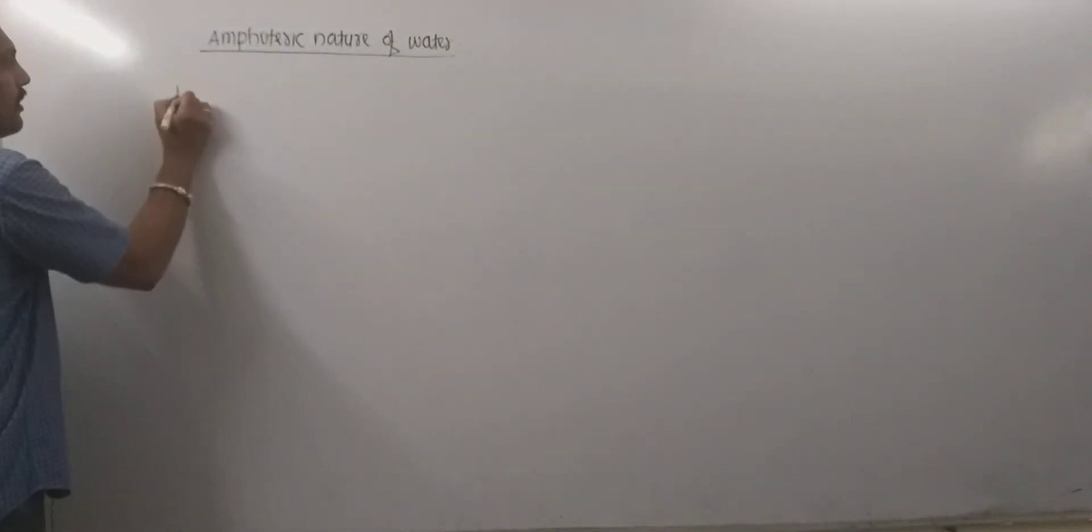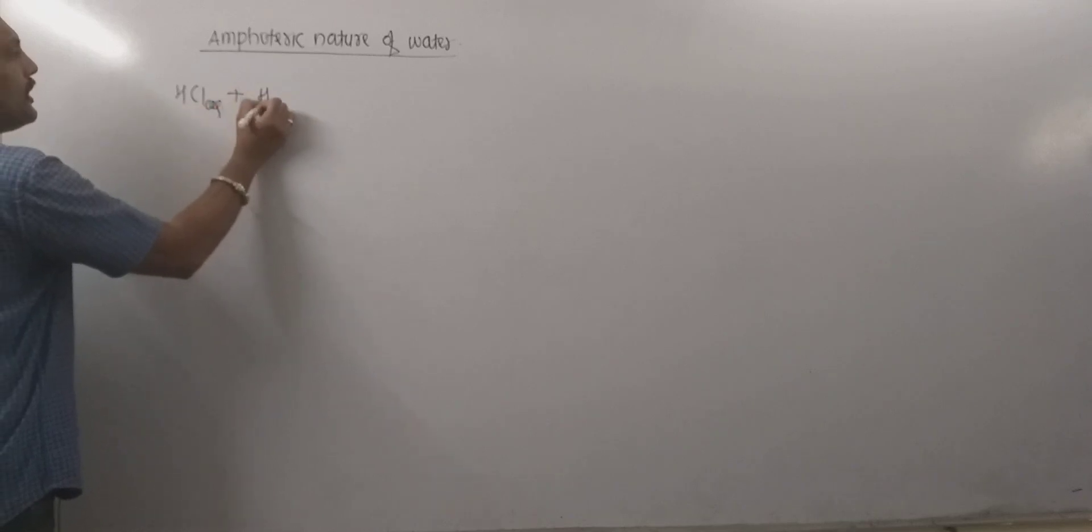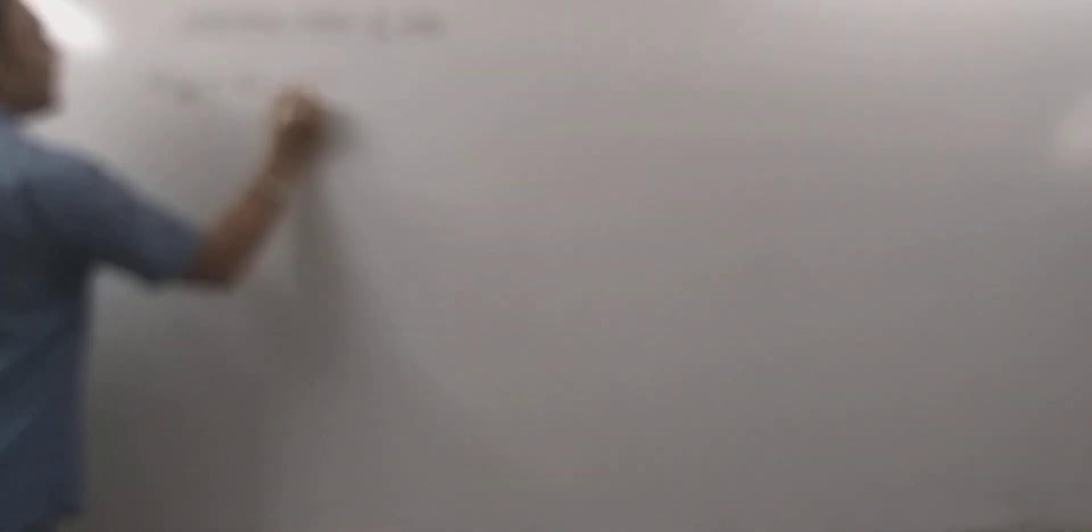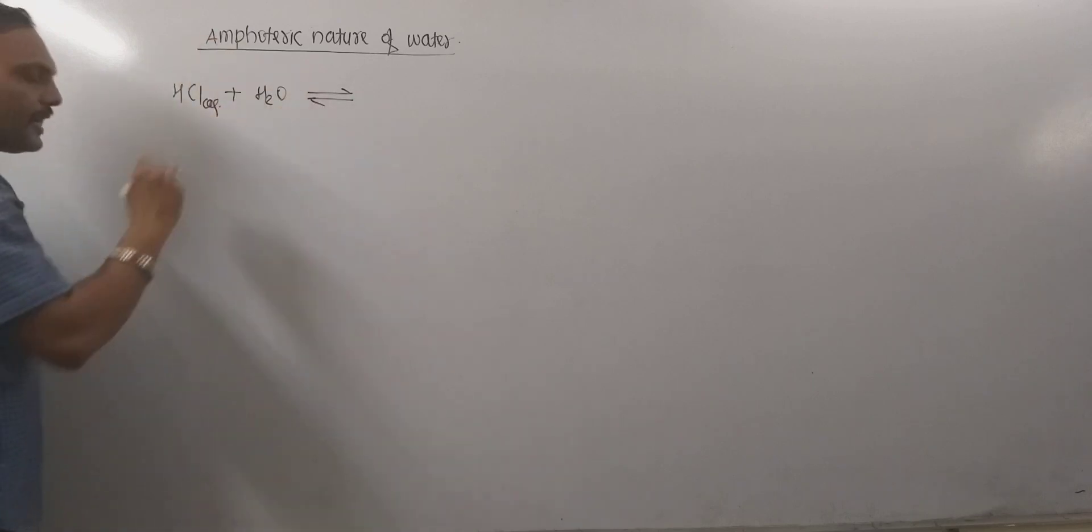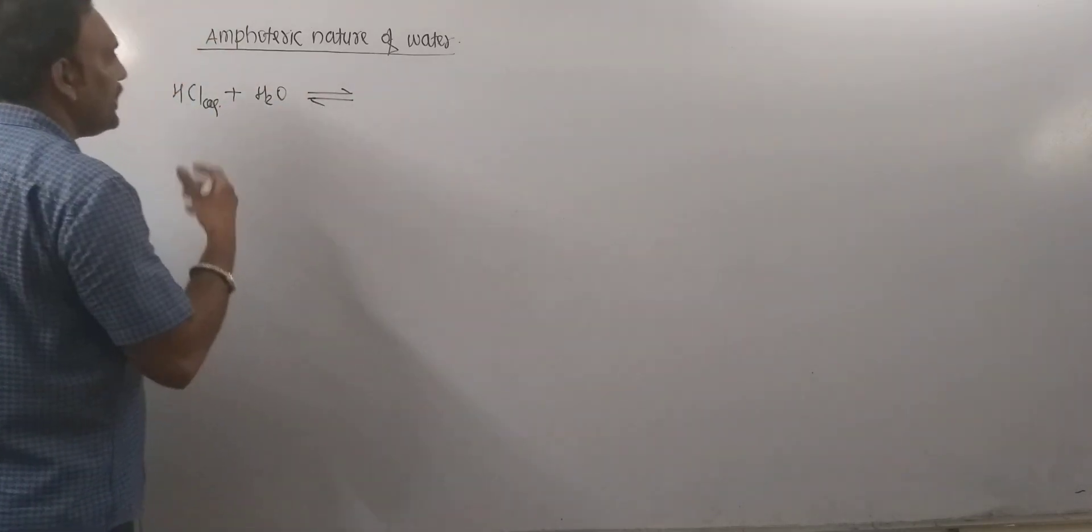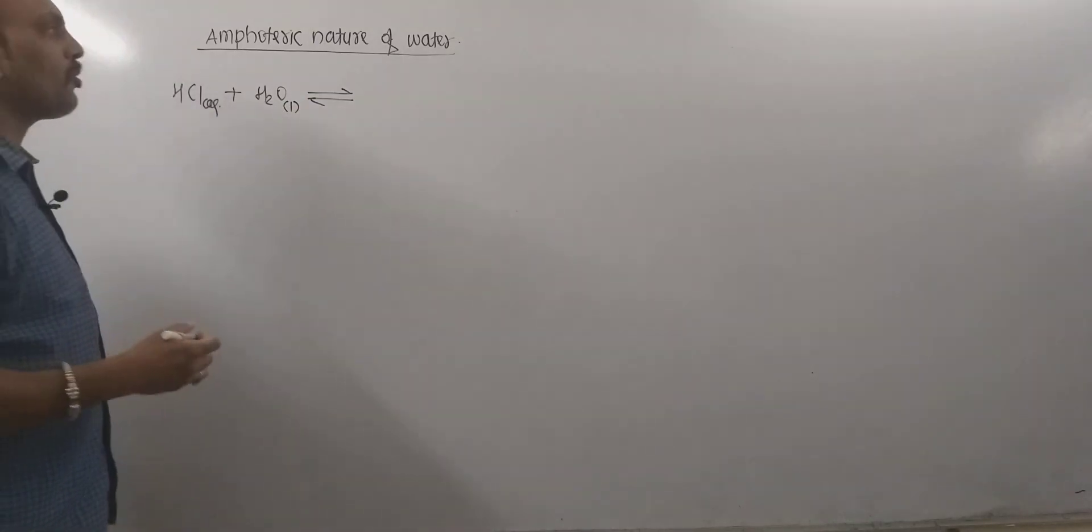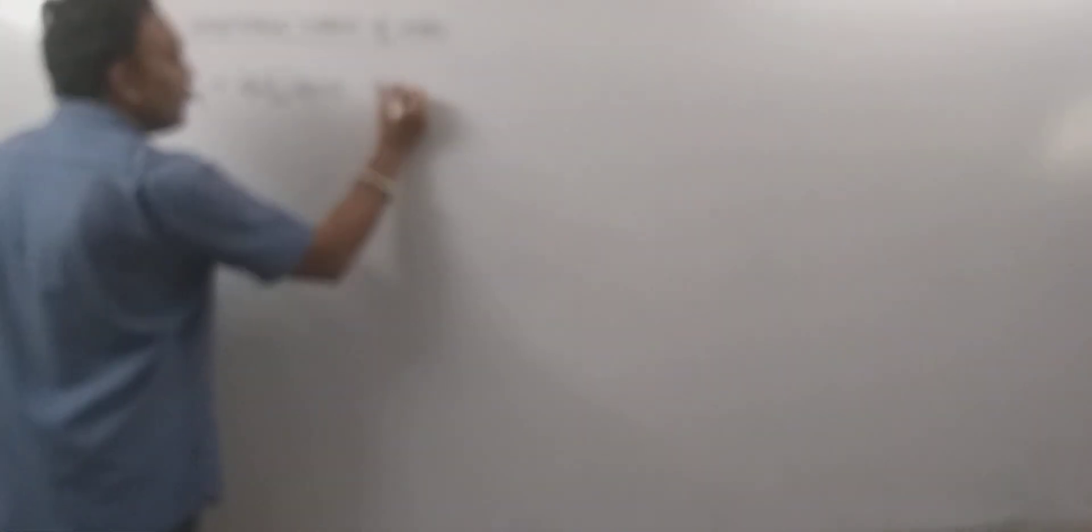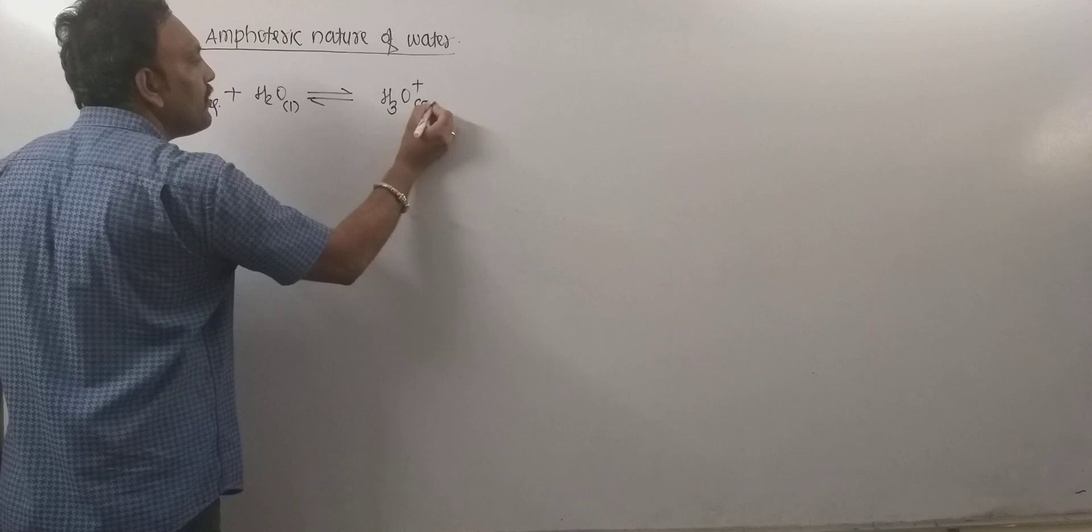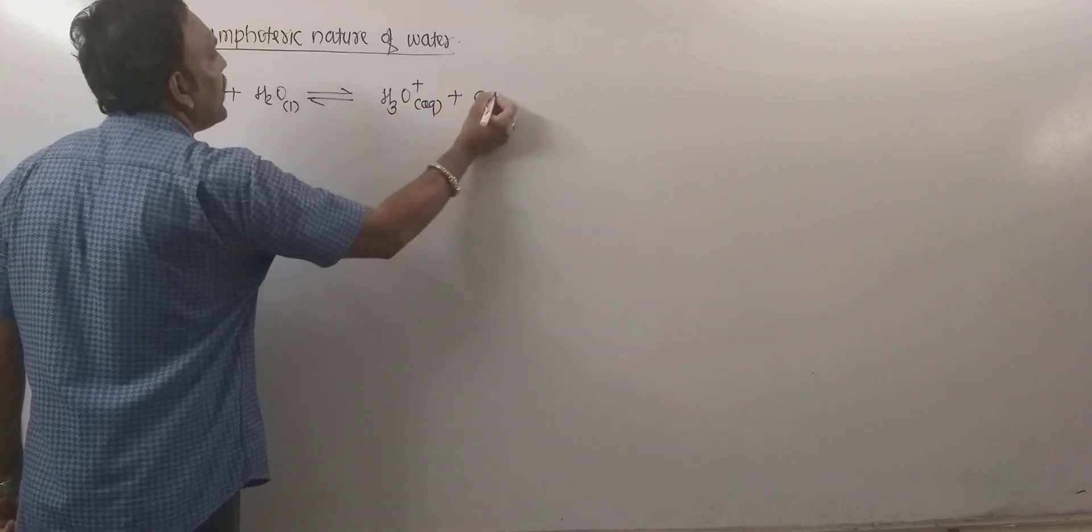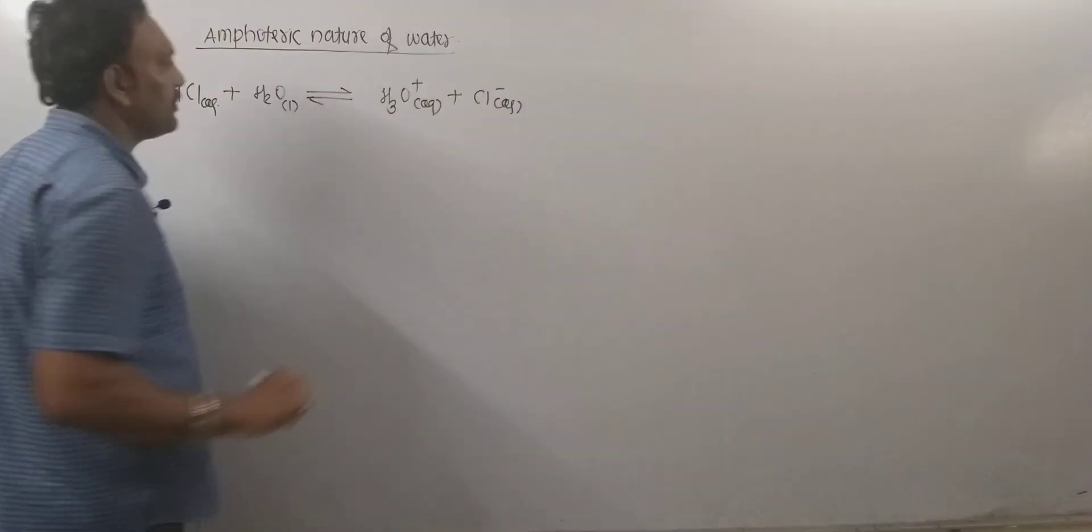When acid like HCl is dissolved in water, then HCl tends to donate proton to water and here water accepts that donated proton. This leads to the formation of H3O+ and Cl- aqueous.